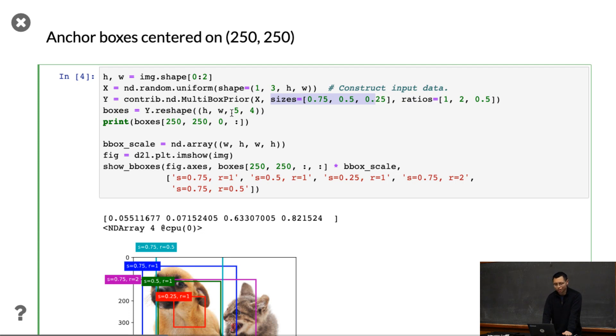Then I can generate a bunch of anchor boxes with different size and different ratios. You can see that you can generate a large number of bounding boxes because for each pixel you can generate multiple anchor boxes.